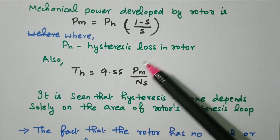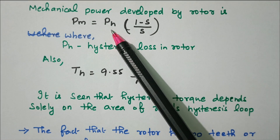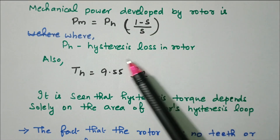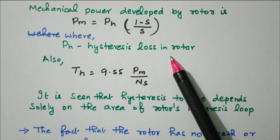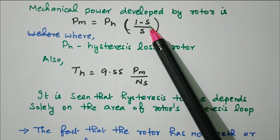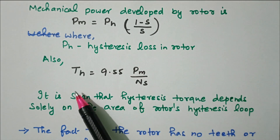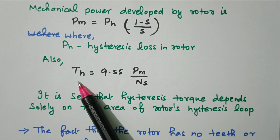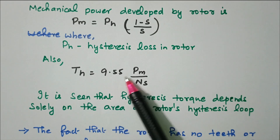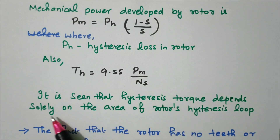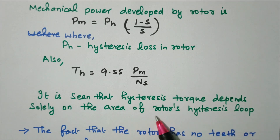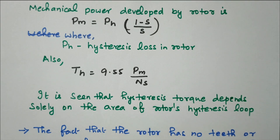The mechanical power developed by the rotor is Pm = Ph × (1 − s) / s, where Ph is the hysteresis loss in the rotor and s is the slip. The torque is T = 9.55 × Pm / Ns. It is seen that hysteresis torque depends solely on the area of the rotor's hysteresis loop — it does not depend on any other parameter.